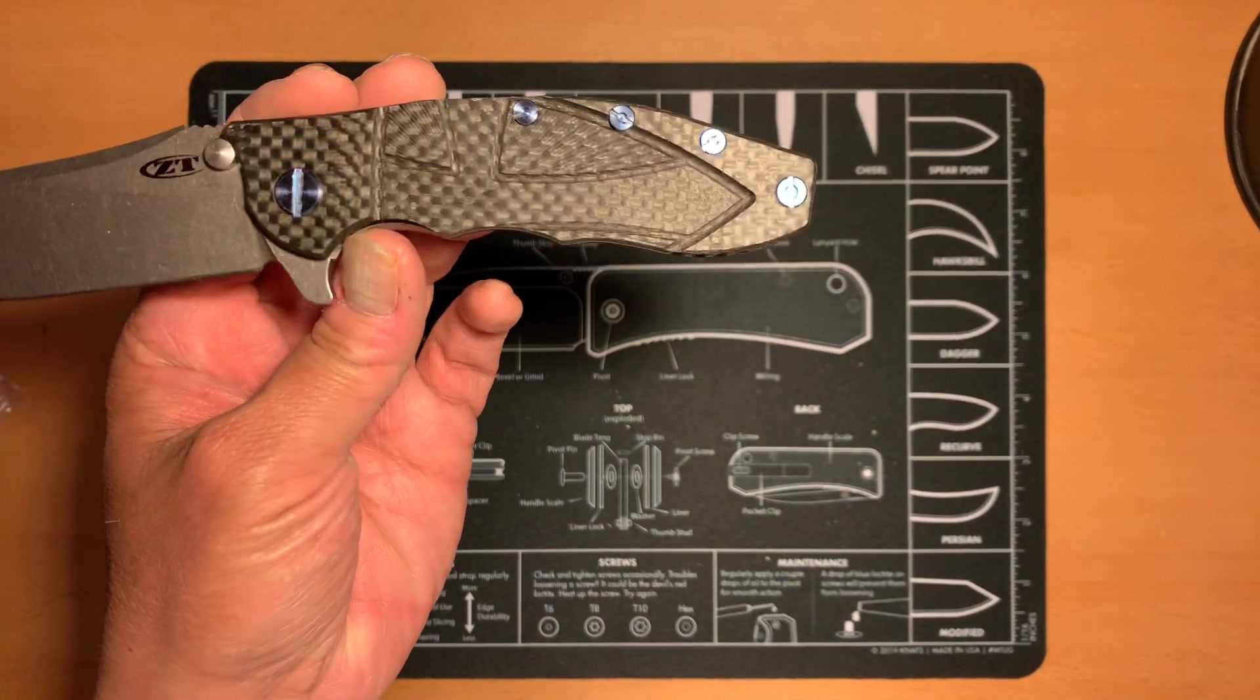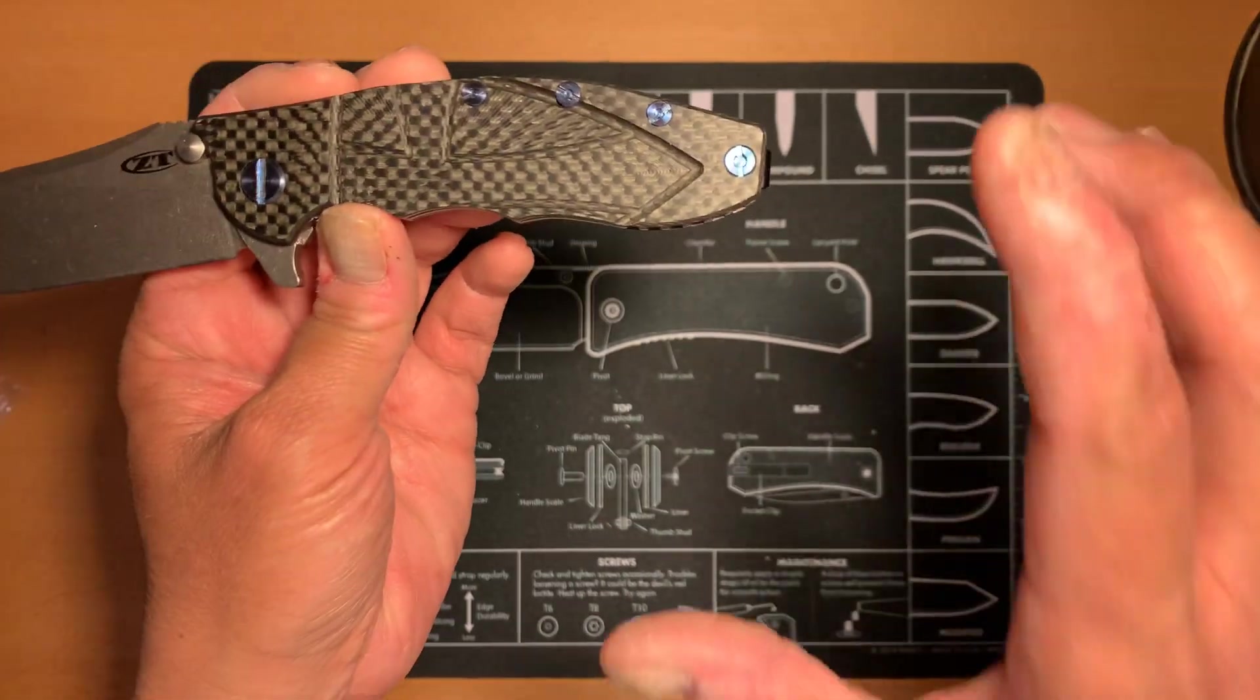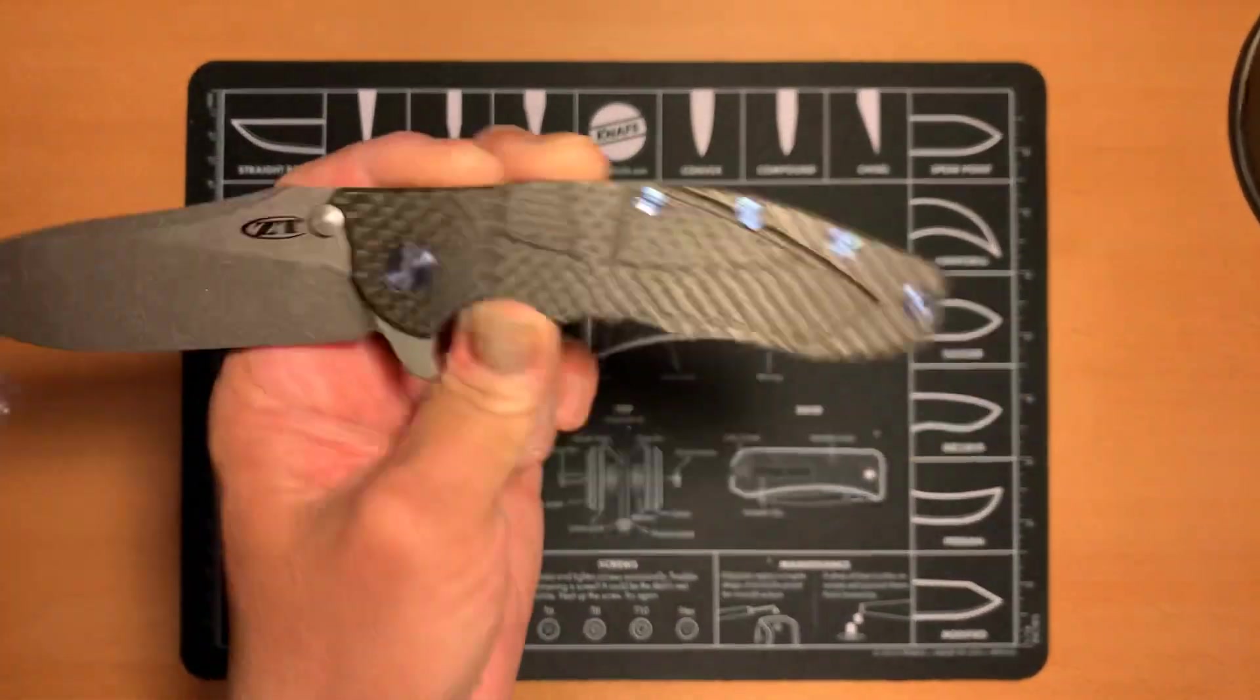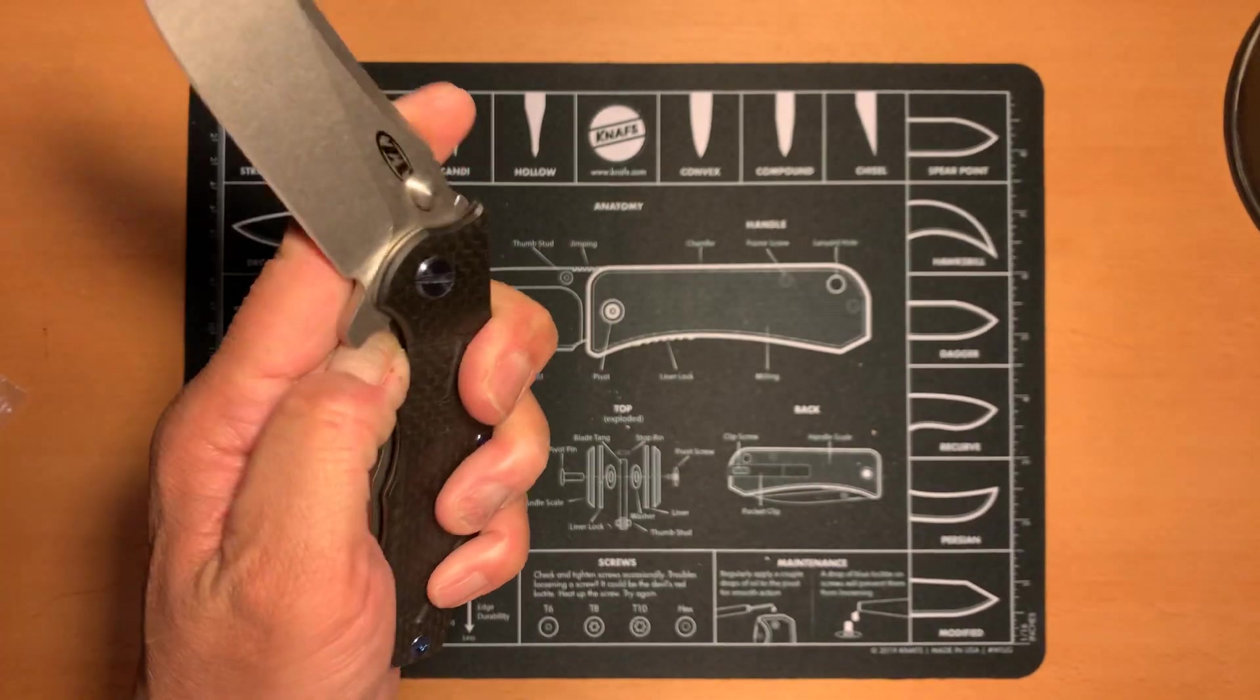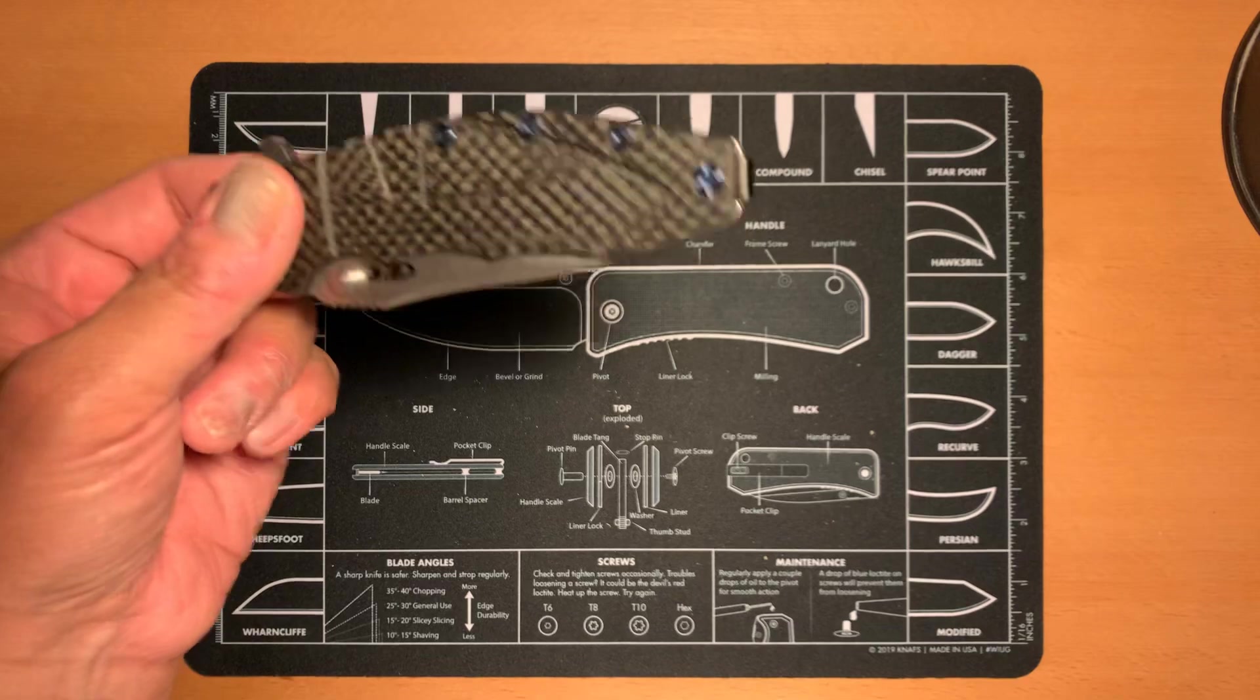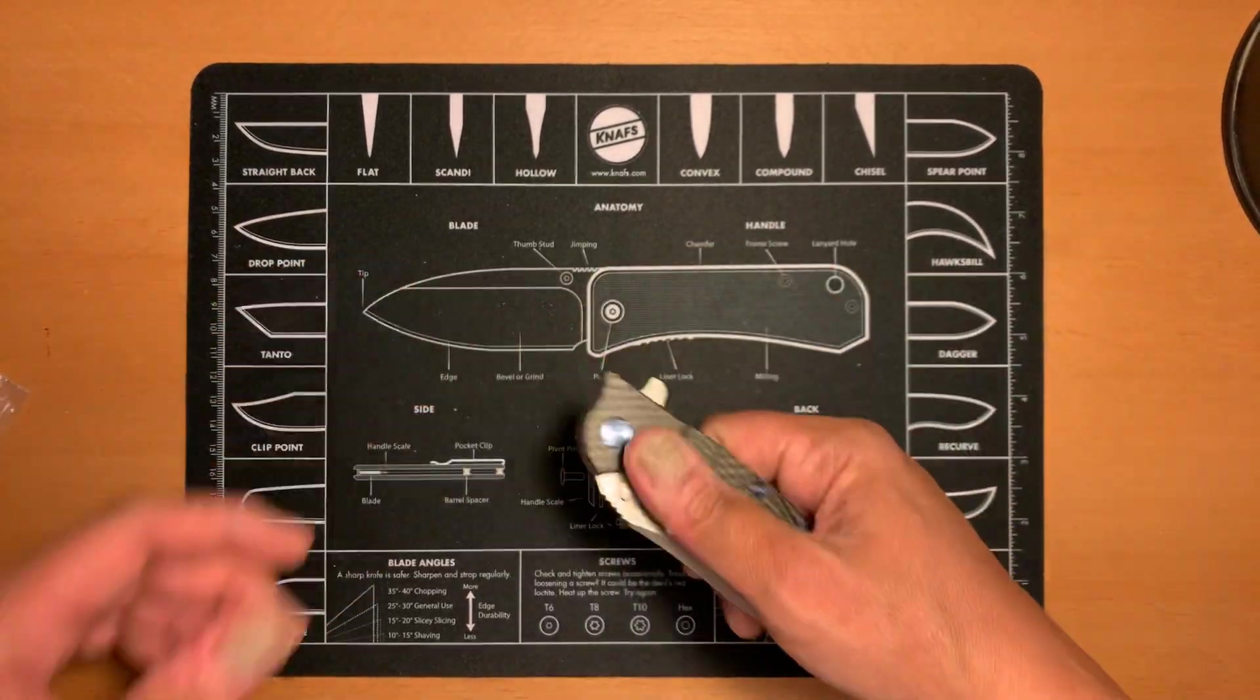This is the original scale that comes with the knife, which is just plain old black G10. Had it upgraded with the carbon fiber scale here with the blue hardware provided by MX Gear. So, you guys might want to check those guys out. They've got some really nice hardware. It's fairly affordable. It's basically just another way for you to customize your knife.